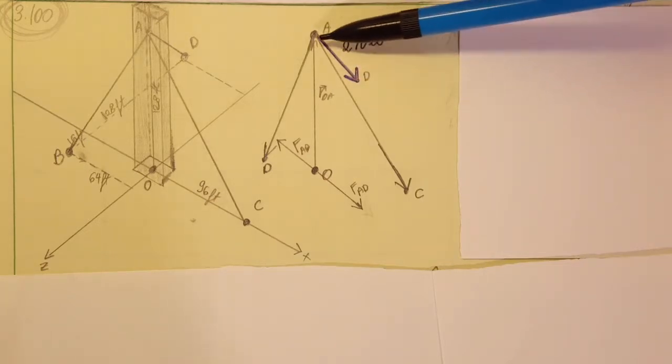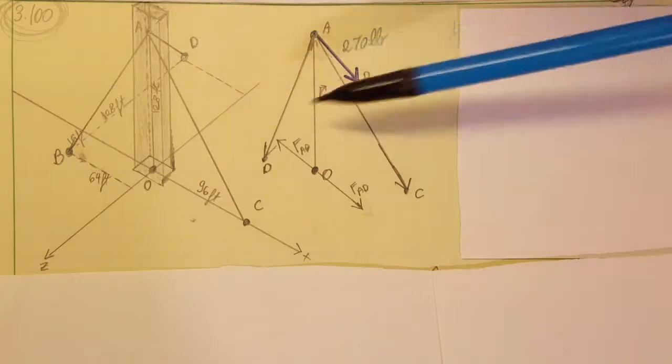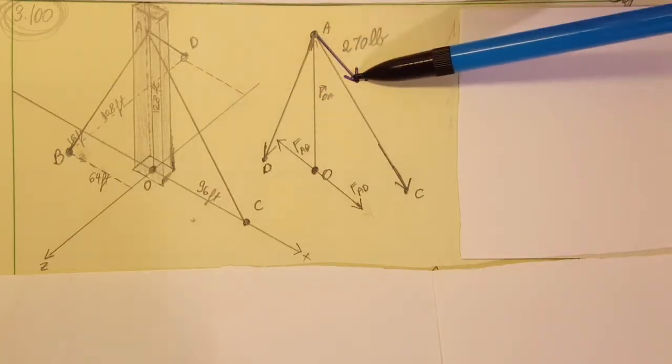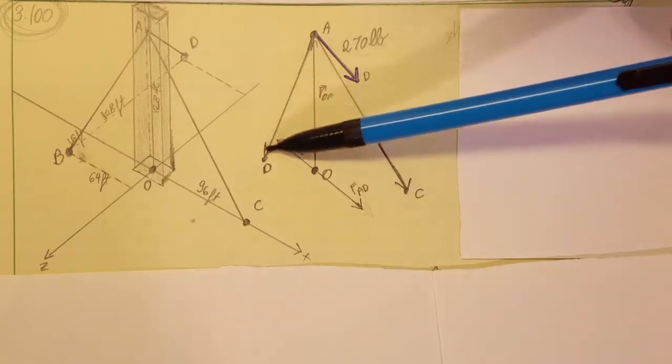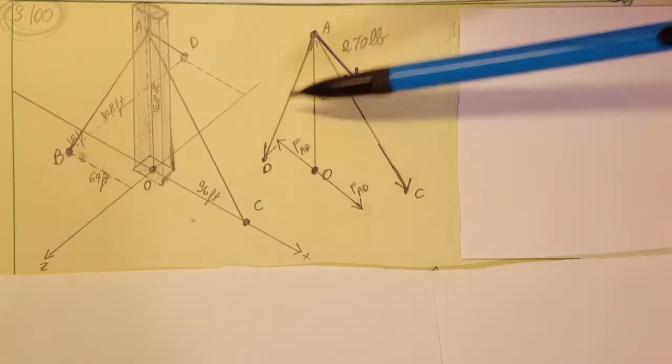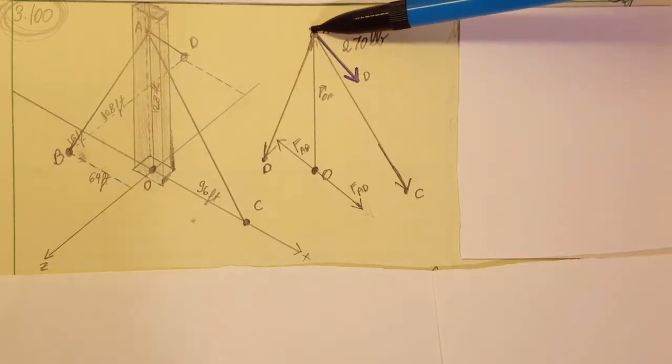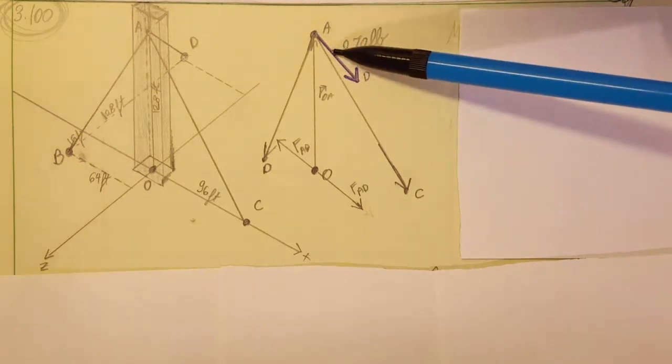So what we're gonna do, we're gonna take AD and we're gonna redraw it down here at point O. We're gonna take this one and draw it here exactly in the same angle and magnitude, nothing changes.